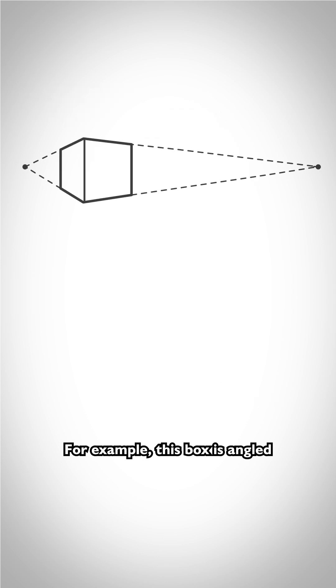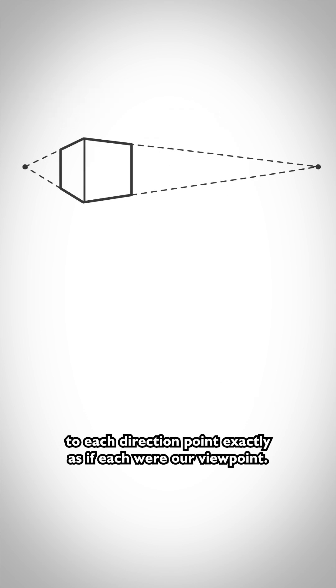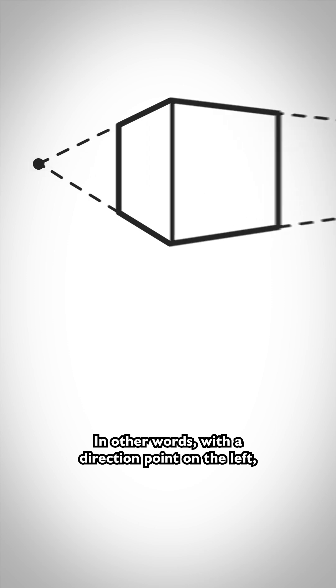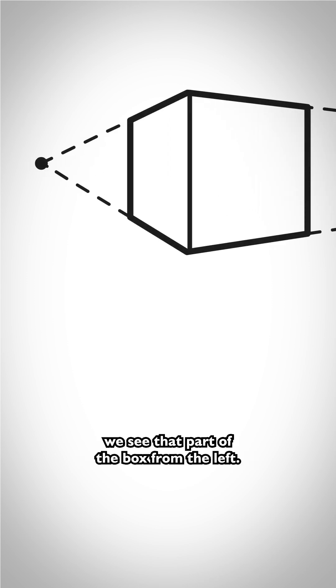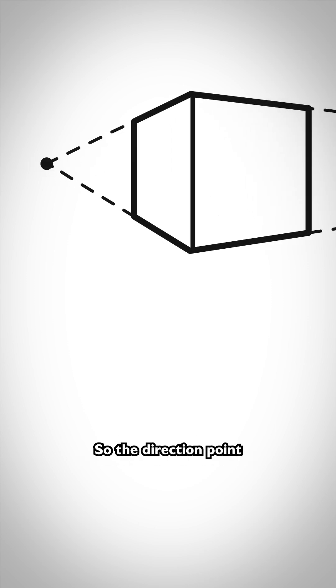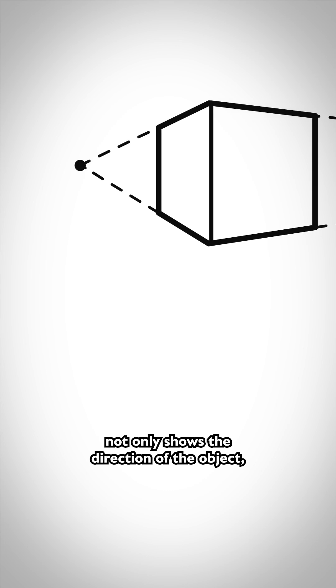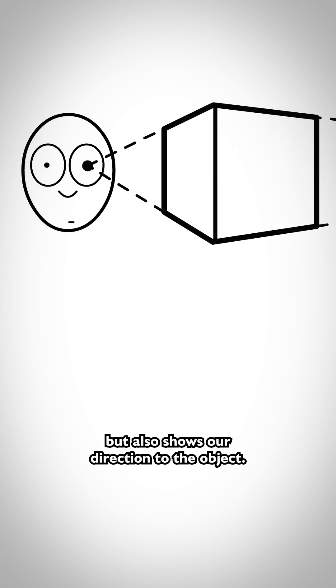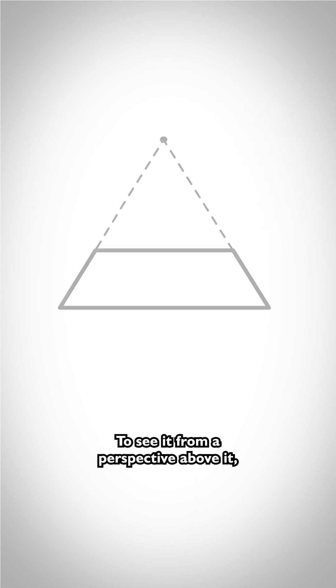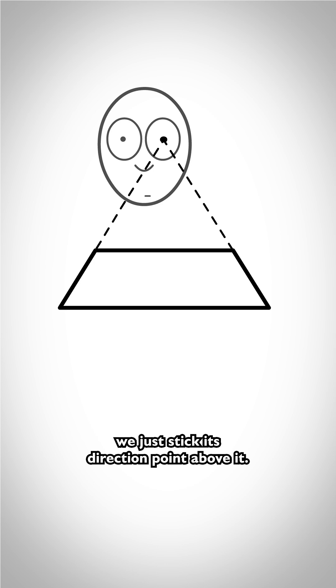For example, this box is angled to each direction point exactly as if each were our viewpoint. In other words, with the direction point on the left, we see that part of the box from the left. So the direction point not only shows the direction of the object, but also shows our direction to the object. To see it from a perspective above it, we just stick its direction point above it.